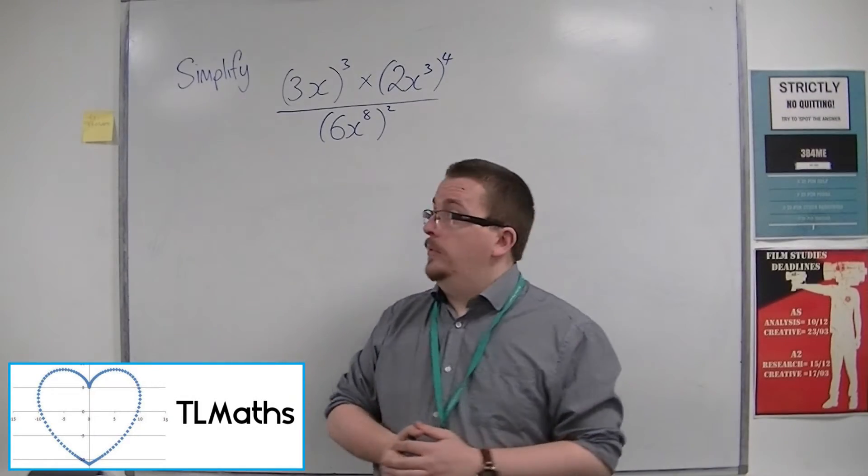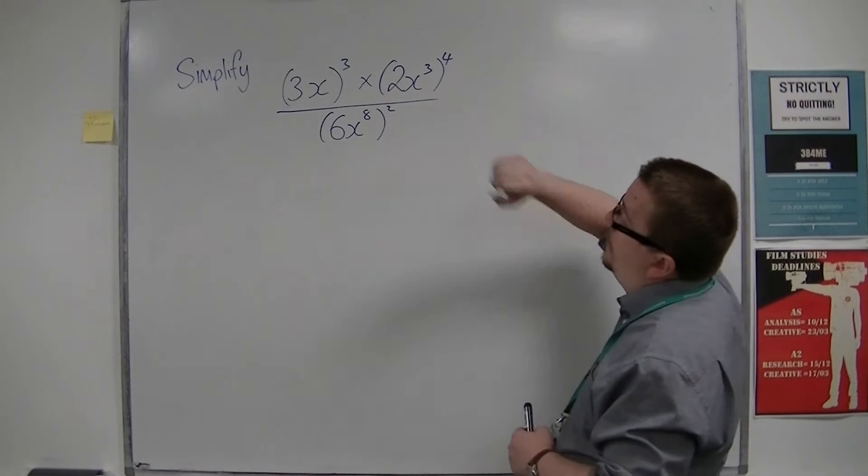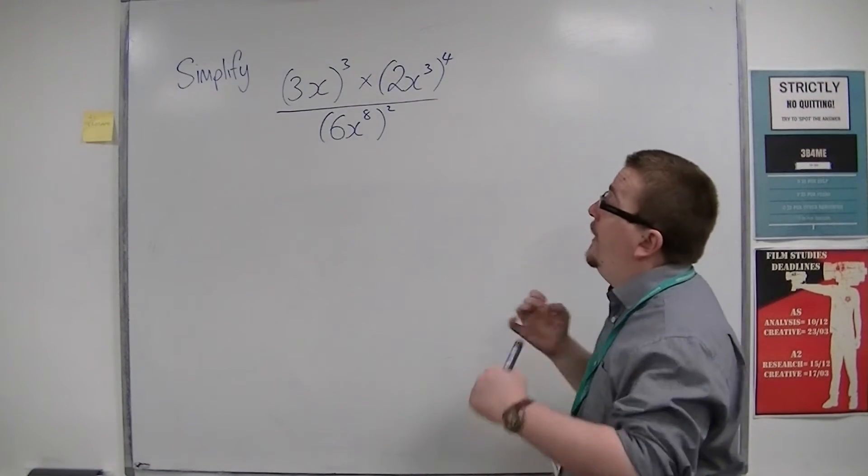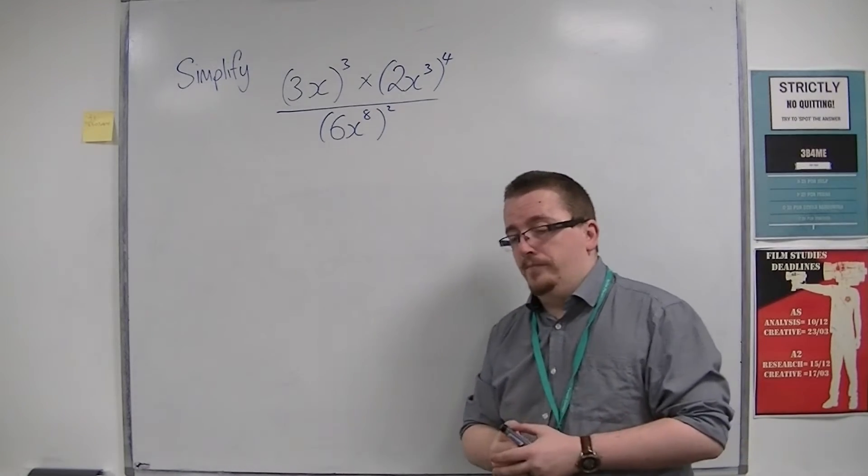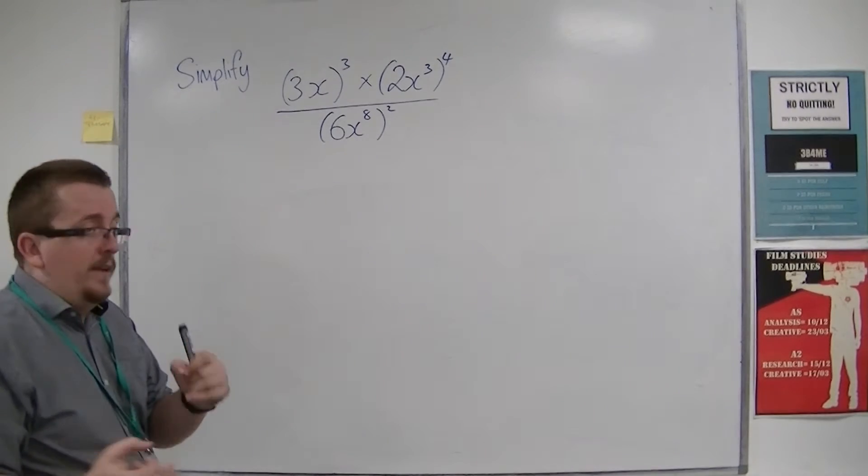In this final example, we want to simplify 3x all cubed times 2x cubed all to the power of 4, divided by 6x to the 8 all to the power of 2. So we're going to simplify each bit individually first.